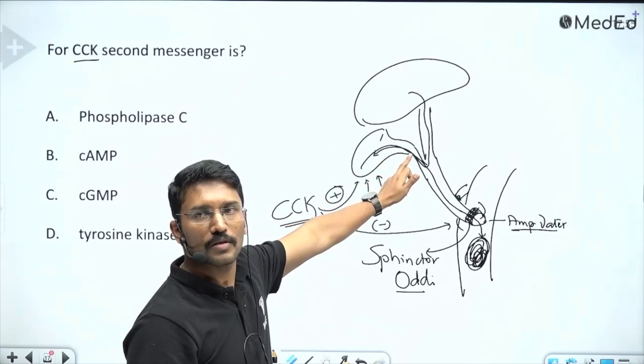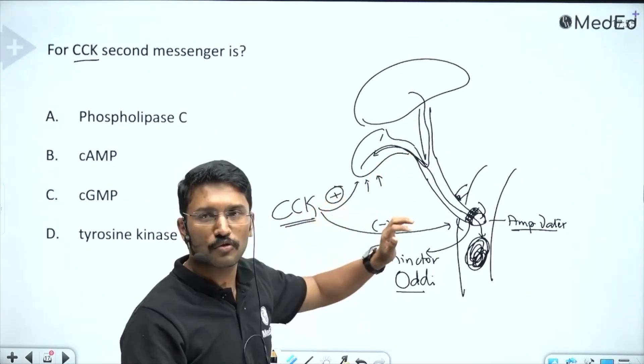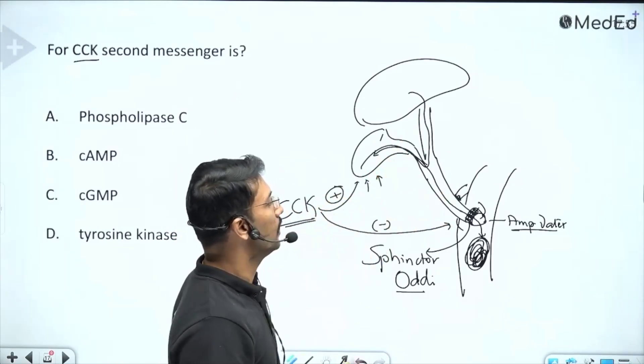Cholecysto means gallbladder, kinin means movement. So it is facilitating gallbladder movement.